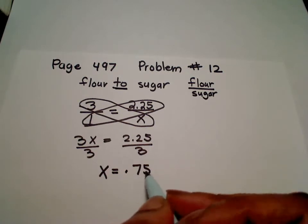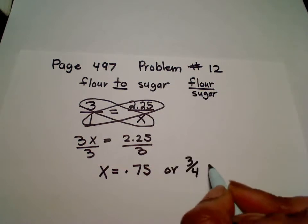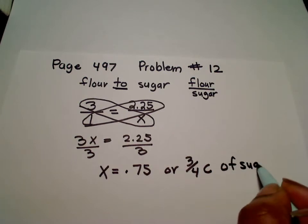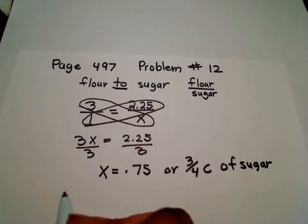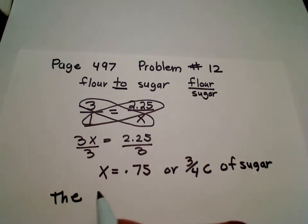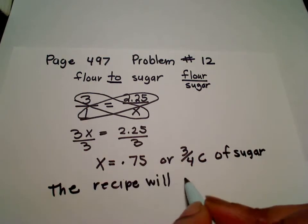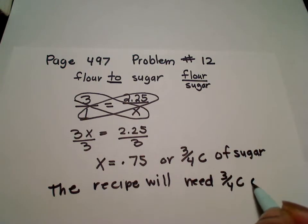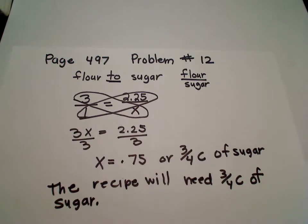Well, we know we won't leave that as 0.75, we'll change that to three-fourths cup of sugar, which sounds very reasonable. So therefore, for this recipe, the recipe will need three-fourths cup of sugar. Very simple. Ratios actually can be a lot of fun.